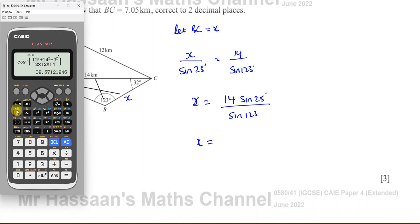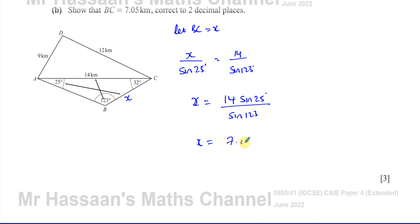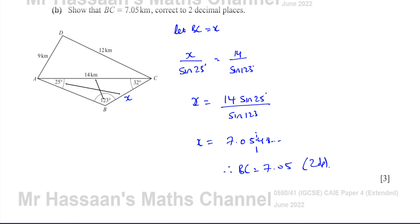Putting this into the calculator — in degree mode — gives 7.0548, continuing. We show that it rounds to two decimal places, so BC = 7.05 to two decimal places, as required. These steps must be shown really clearly, especially in a 'show that' question.